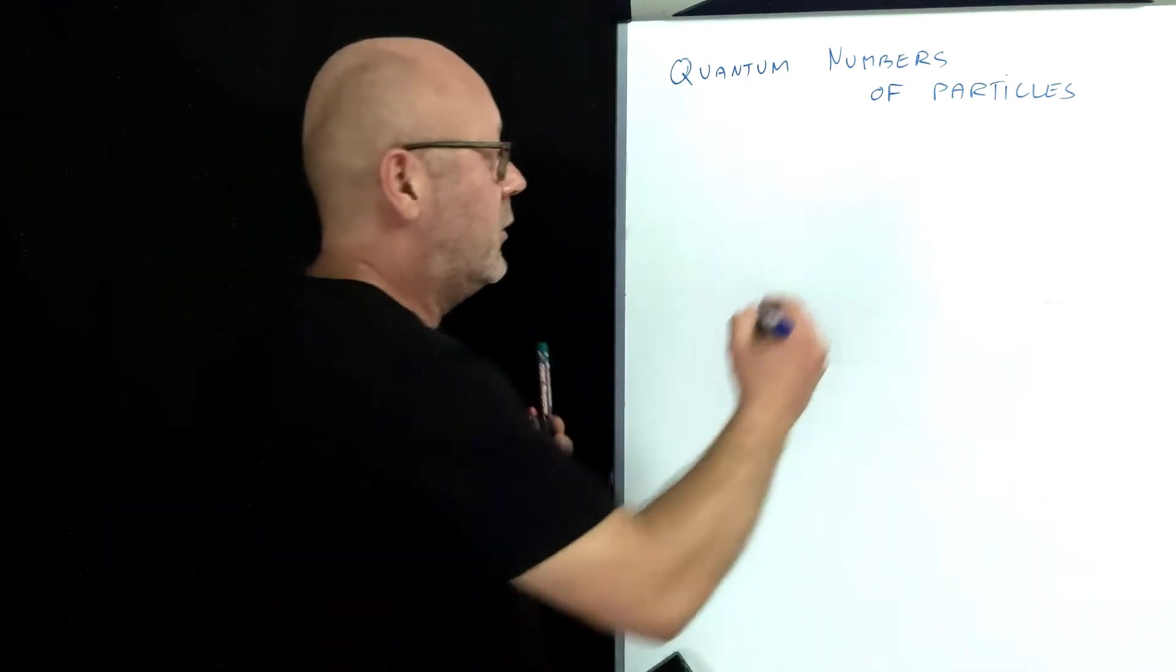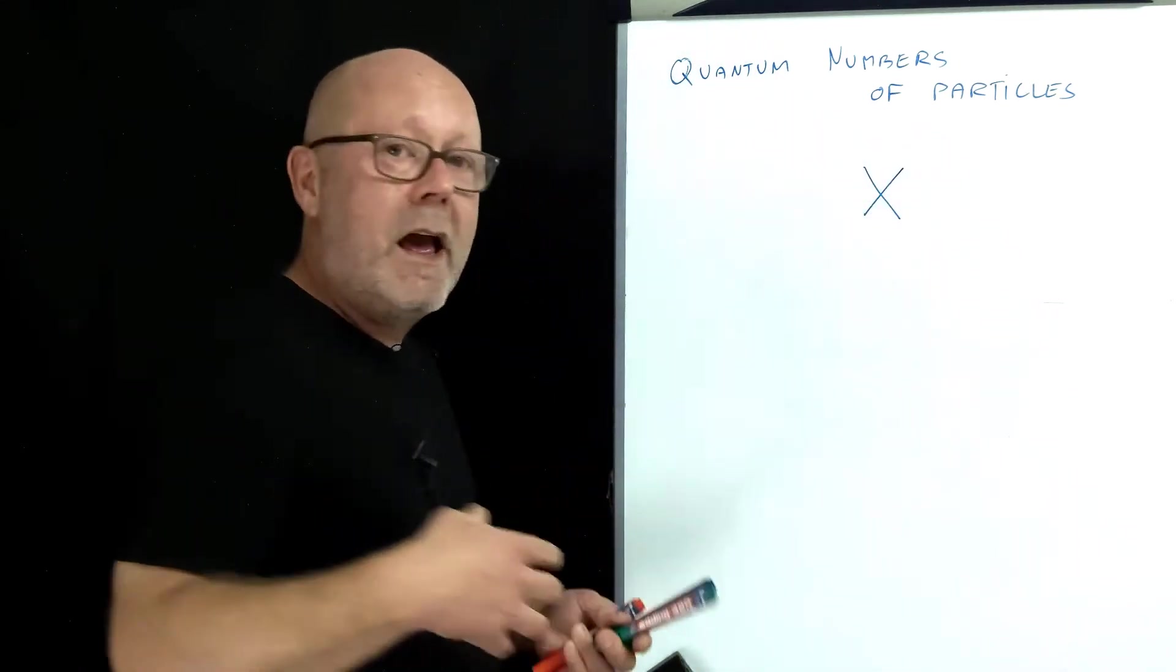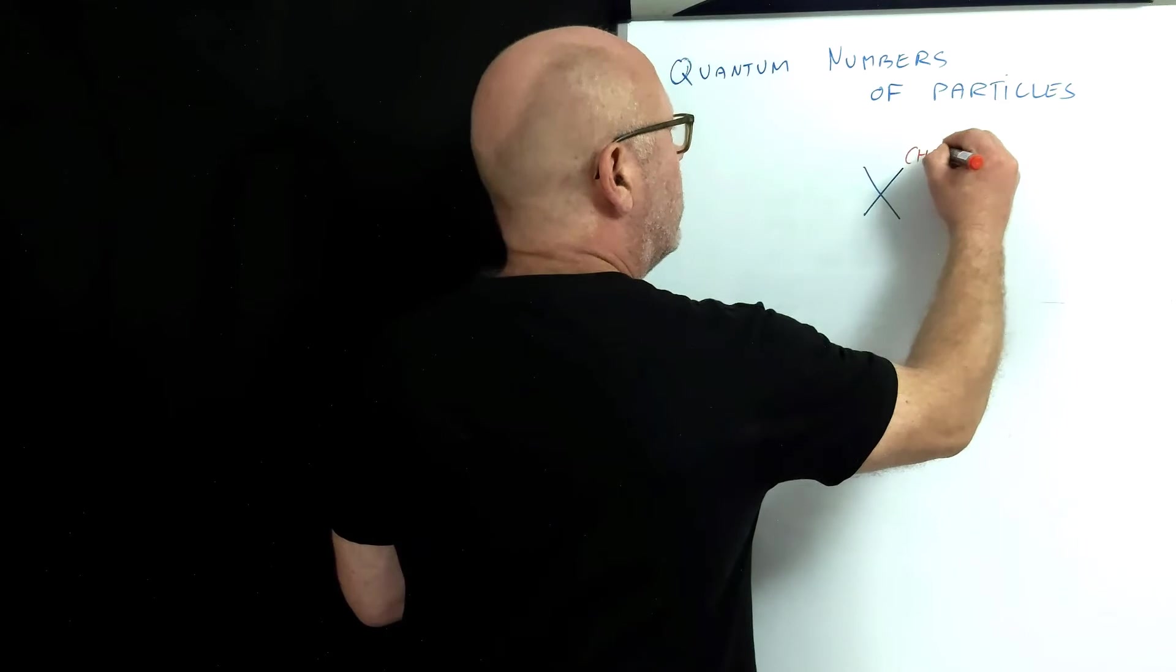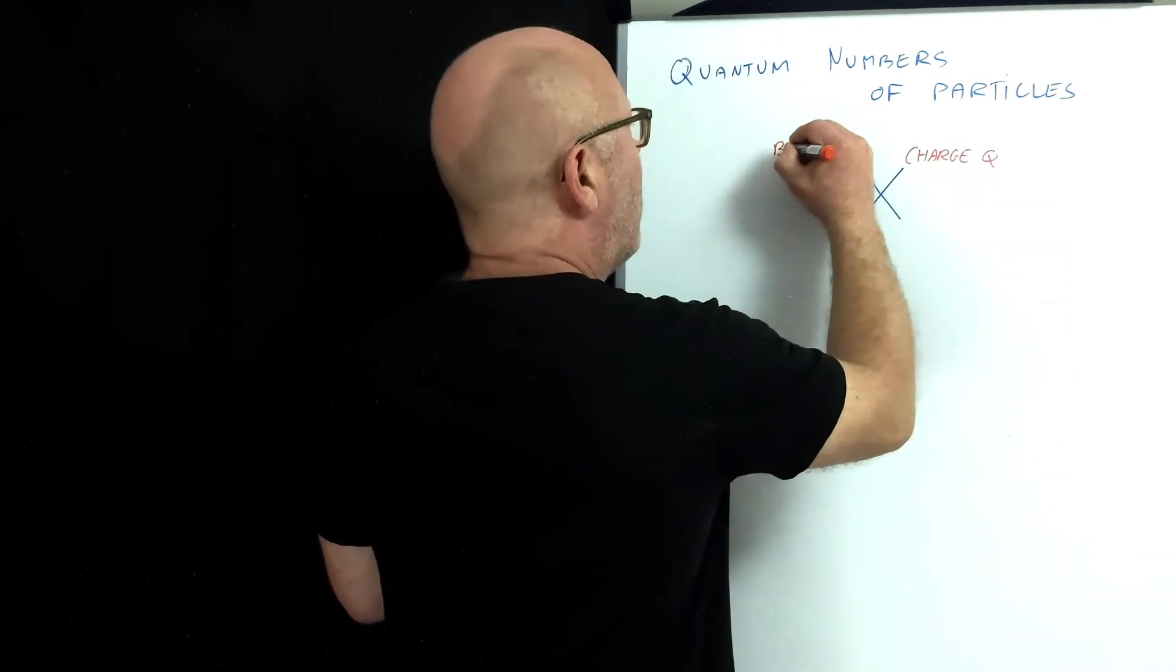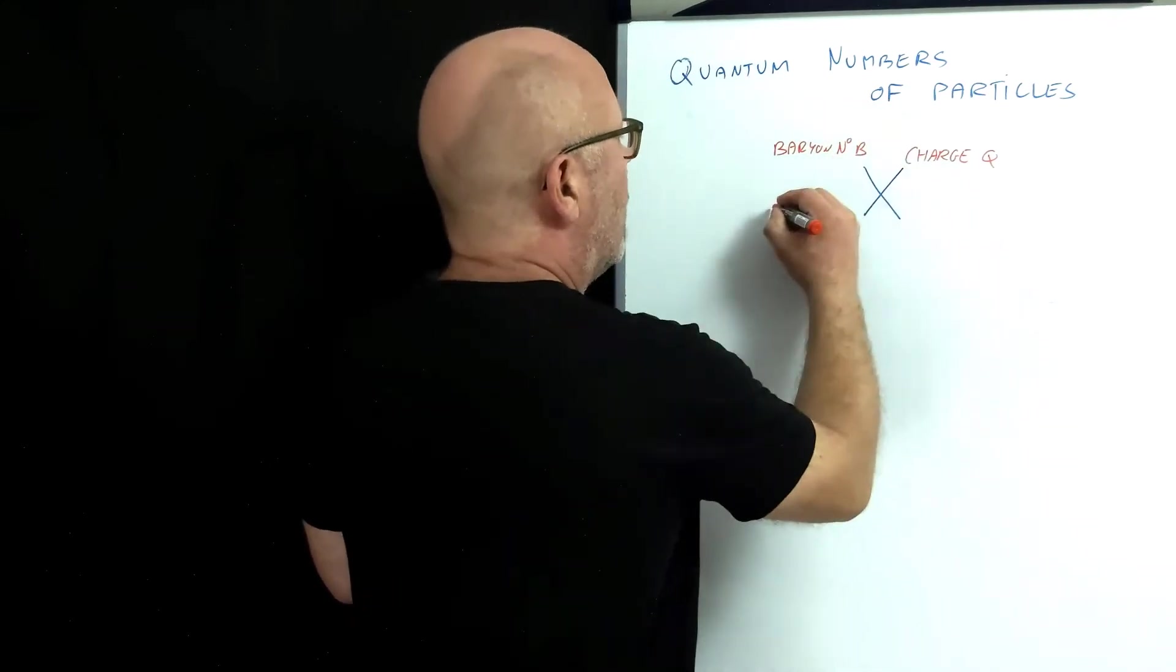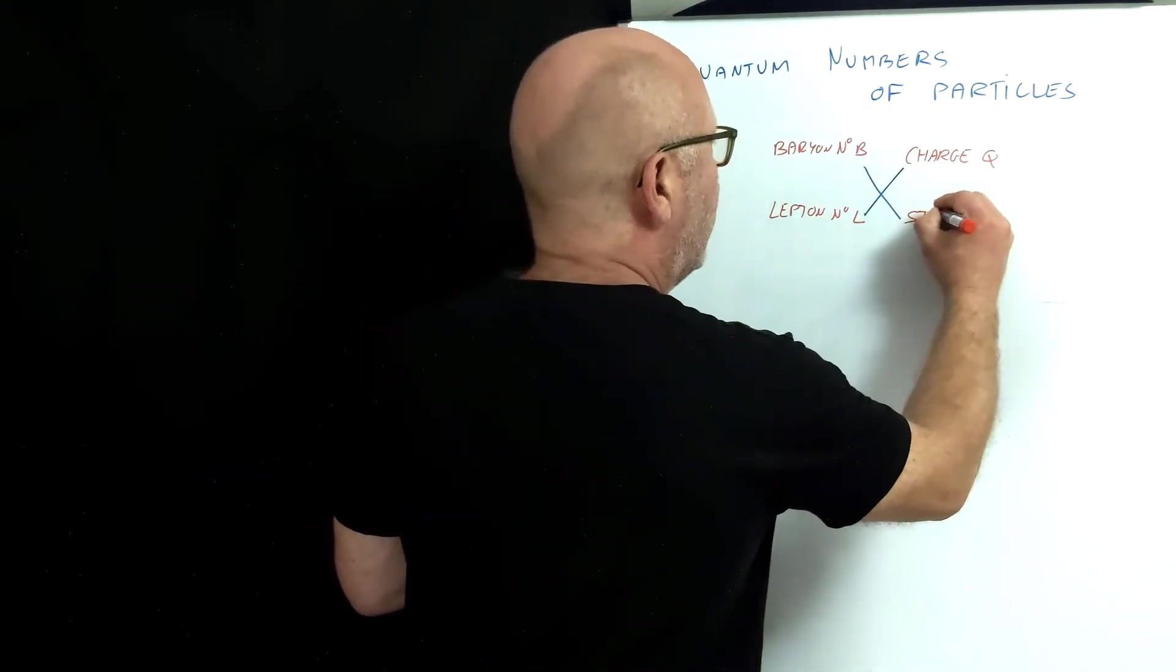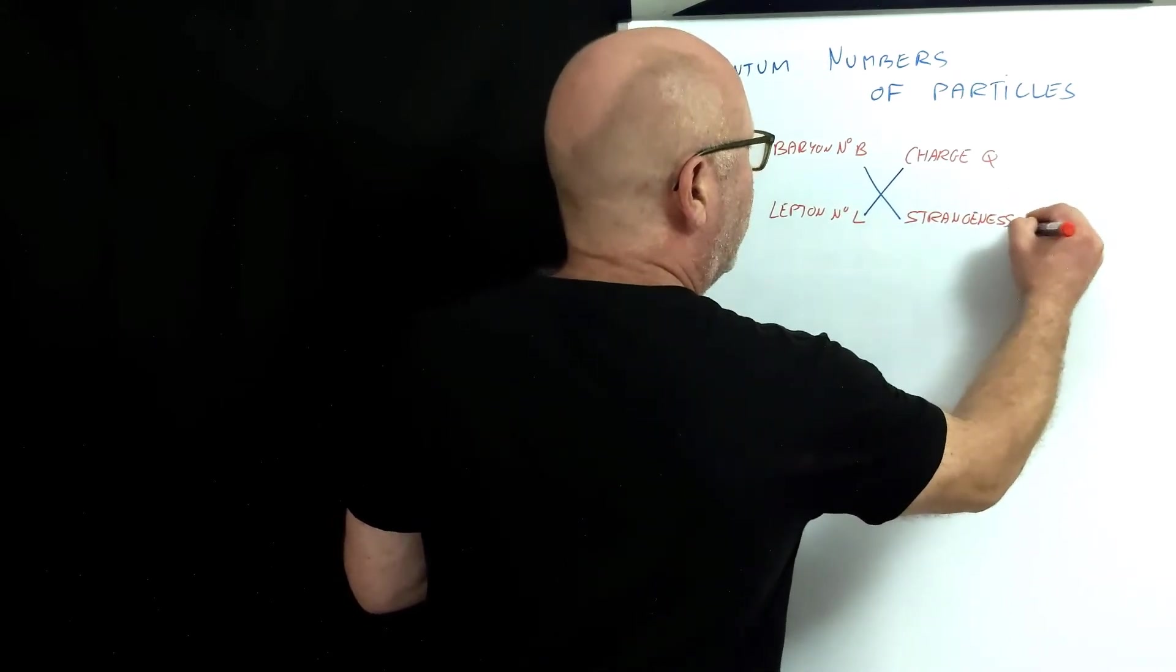Consider a particle x. x will have these four properties, these four quantum numbers. That would be the charge q, the baryon number b, the lepton number l, and what we call the strangeness s.